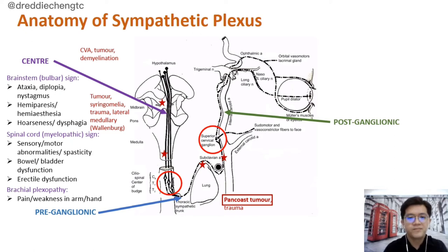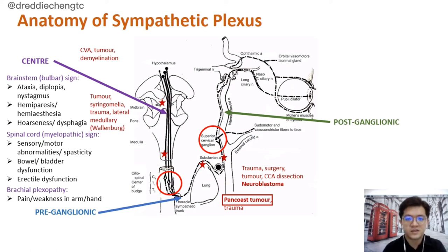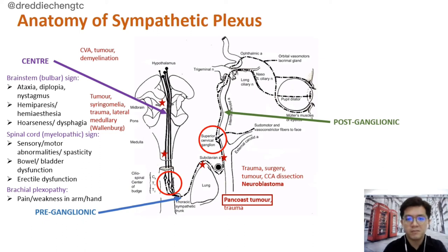Secondly, any lesion over the neck, whether caused by trauma, surgery, a tumor, or even common carotid artery dissection, can cause Horner's Syndrome. In pediatric patients presenting with a neck mass and abdominal mass, the most common cause is neuroblastoma.